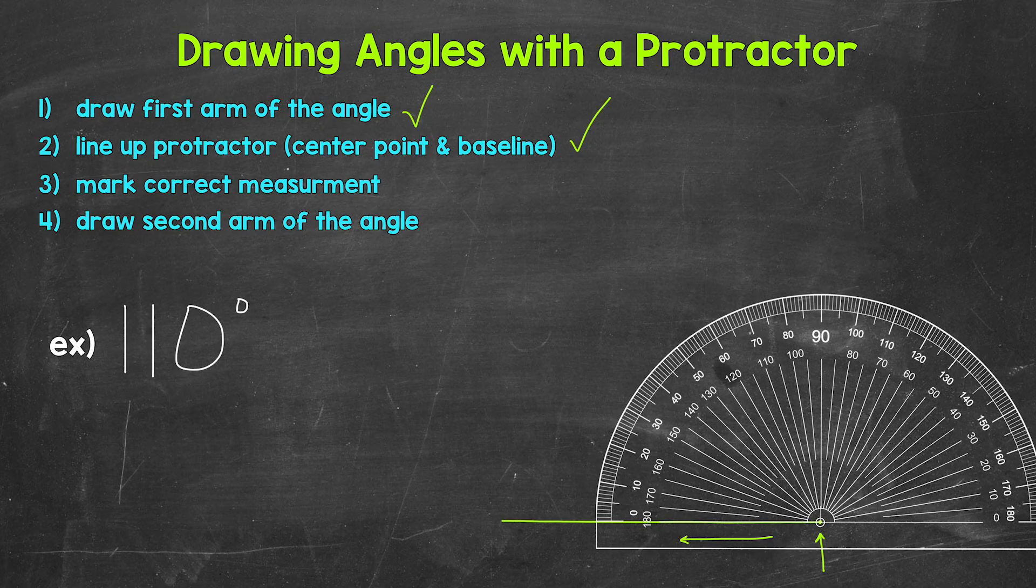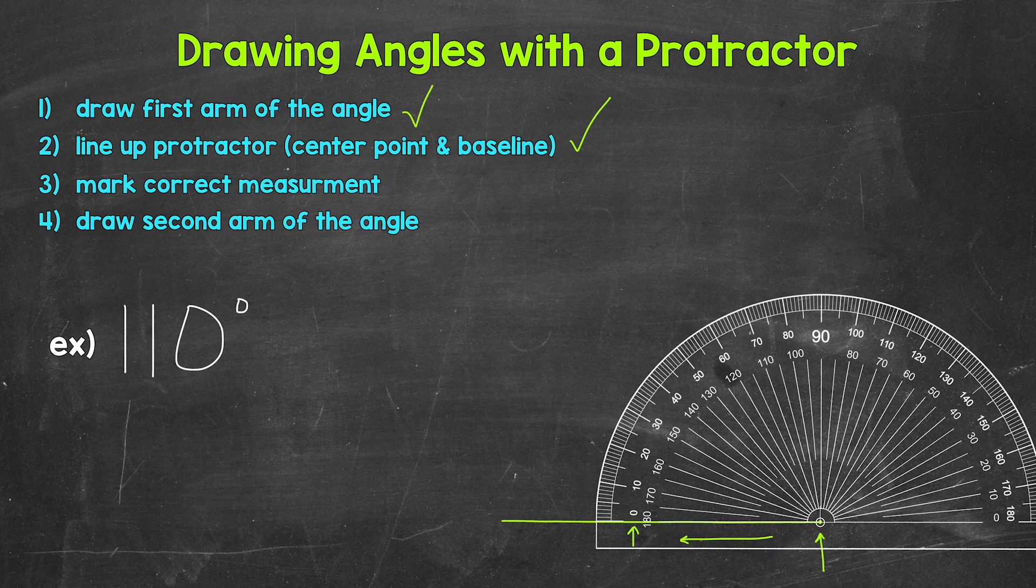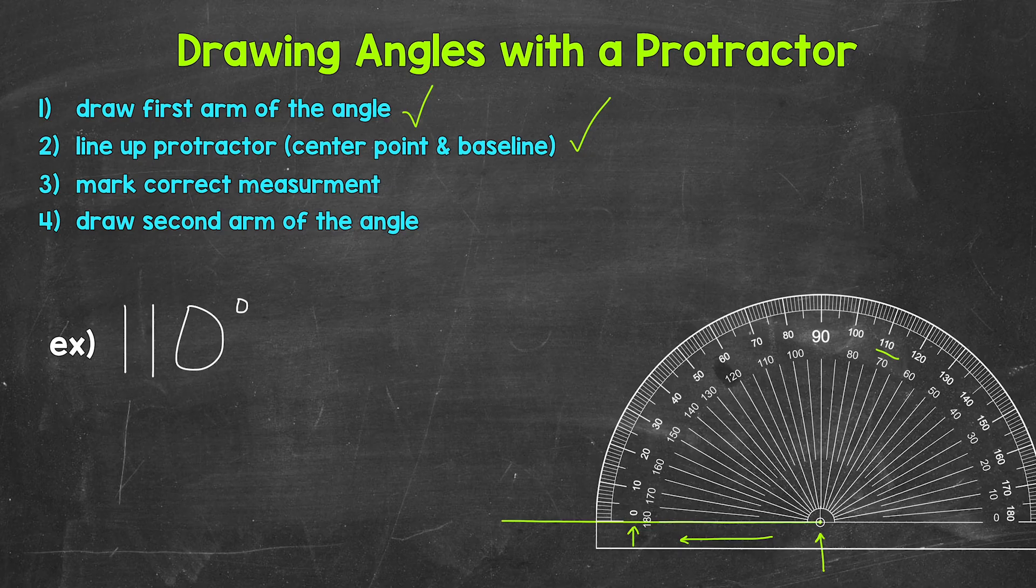Or using the zero degrees from the baseline, the arm of the angle lined up with the baseline goes through the zero degrees on the outside track of numbers. This tells us to use the outside numbers. However we want to think about it, it's going to be this 110 degrees right here. So we make a small mark at 110 degrees. Here's our small mark, and that's it for step three.